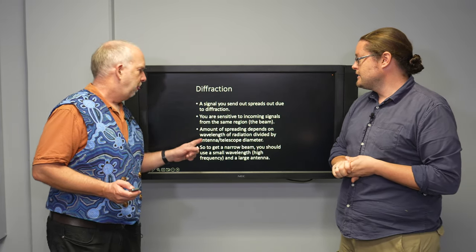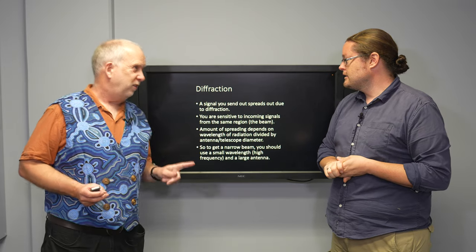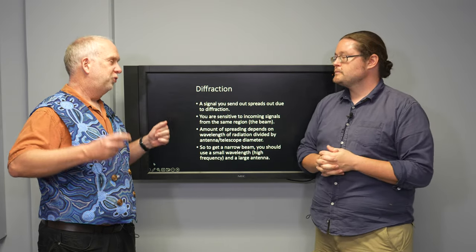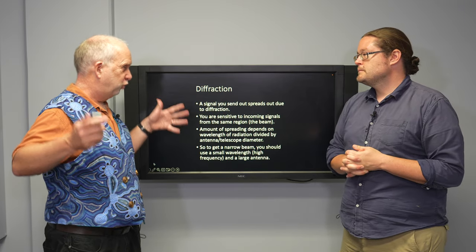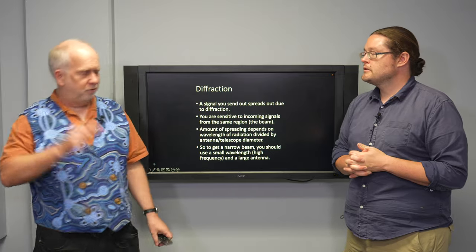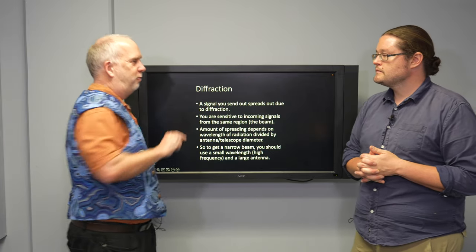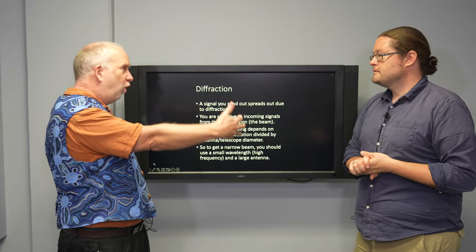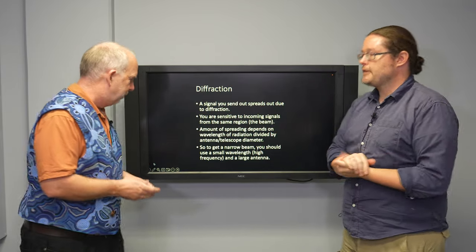So the amount of spreading depends on the wavelength of whatever radiation you're using. Okay. The bigger the wavelength, the more it spreads. And also, it depends on how big your dish is. The bigger the dish, the smaller the spread. So I want a very directional signal going just to the tip of your nose. I need a very big antenna and a very short wavelength. That's right. If I had a very long wavelength and a small antenna, it goes really far.